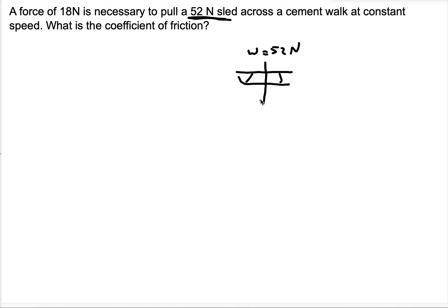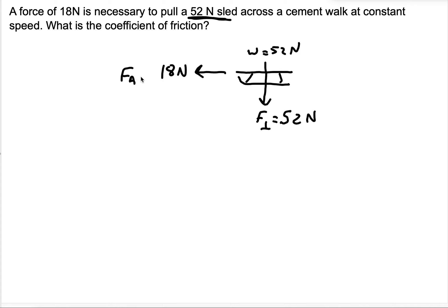The weight points straight down. This sled — because it doesn't say otherwise — we're going to assume it's on a flat surface. So what that means is that the perpendicular force, or the normal force, the force that pushes the two surfaces together, is going to be equal to the weight: 52 Newtons. And then we're pulling this sled with 18 Newtons, so that is going to be our applied force of 18 Newtons.